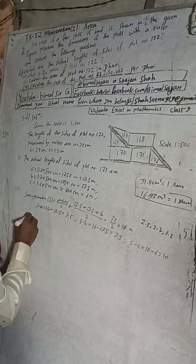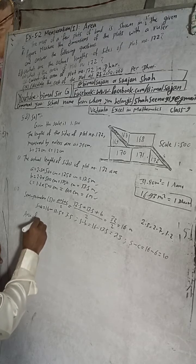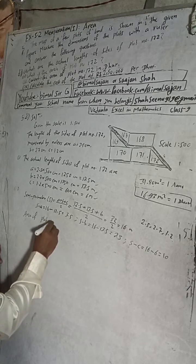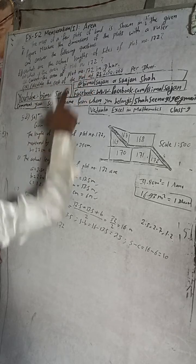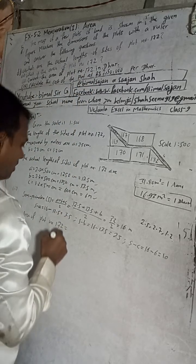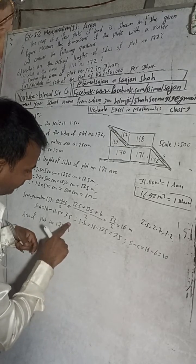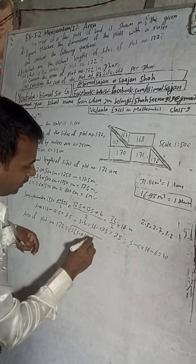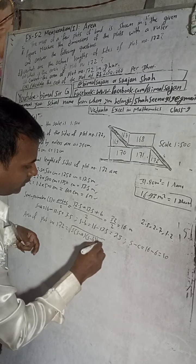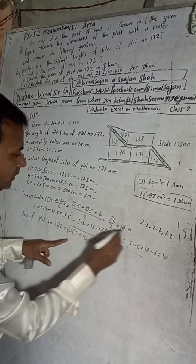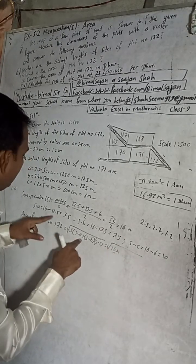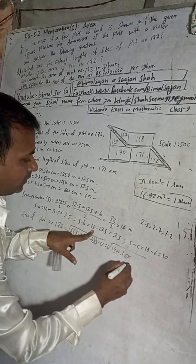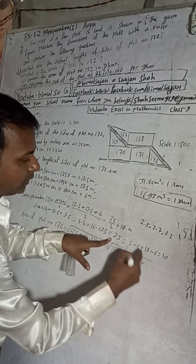Now, area of plot number 172. Using Heron's formula: area equals root of S into S minus A into S minus B into S minus C. So that is root of 16 into 3.5 into 2.5 into 10.